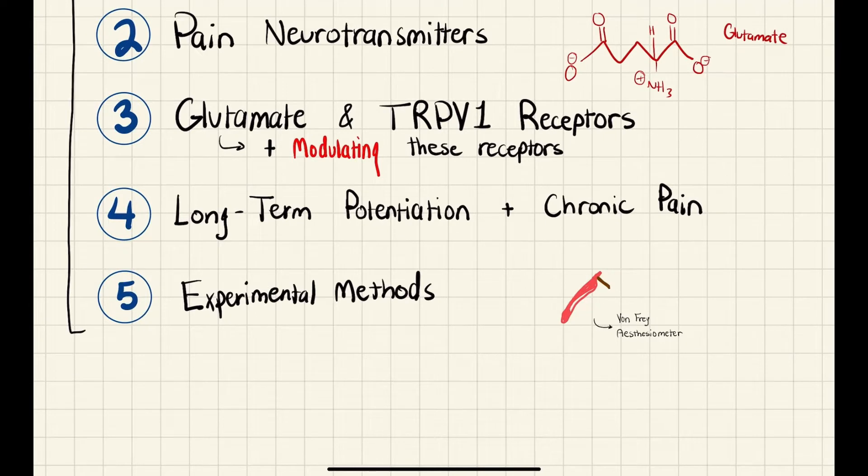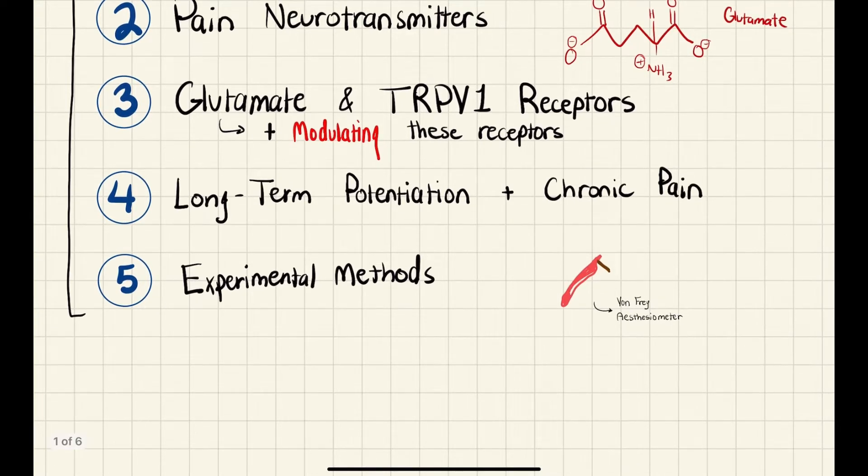Then we'll be going over some glutamate and TRP-V1 receptors, and how you can actually modulate these receptors using various different compounds. And then we'll be touching on chronic pain and long-term potentiation and depression. It's a very interesting topic, which I don't feel like we learned enough about in class. And then we'll finally touch on experimental methods, which should be very useful in the future.